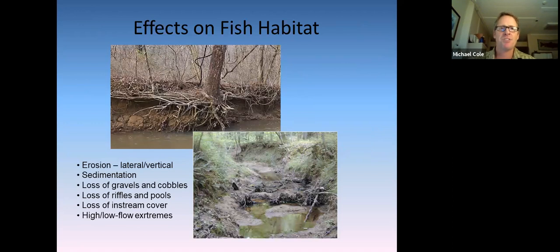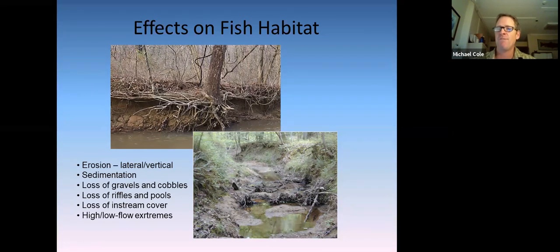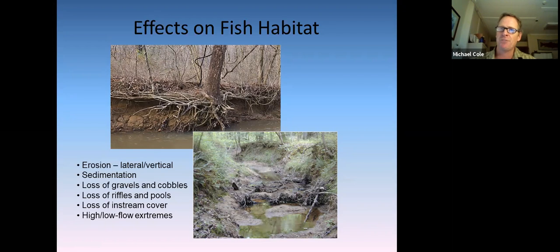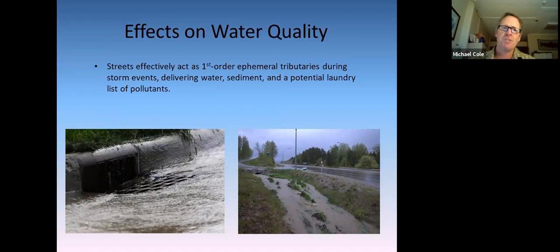The geomorphic changes from hydromodification — lateral and vertical erosion and sedimentation — create drastically different habitat conditions for fish and invertebrates. We see incision, widening, loss of habitat complexity, and loss of large woody debris. We have urban streams in lower Clackamas County that look this severely damaged in some places, as we also see in other parts of the Portland metro area, particularly in the Tualatin River Valley.